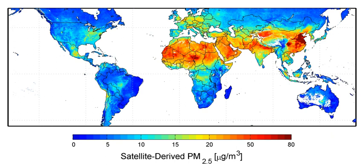Space debris describes particulates in the vacuum of outer space, specifically particles originating from human activity that remain in geocentric orbit around the Earth. The International Association of Astronauts defines space debris as any man-made Earth-orbiting object which is non-functional with no reasonable expectation of assuming or resuming its intended function, including fragments and parts thereof. Space debris is classified by size and operational purpose and divided into four main subsets: inactive payloads, operational debris, fragmentation debris, and microparticulate matter.